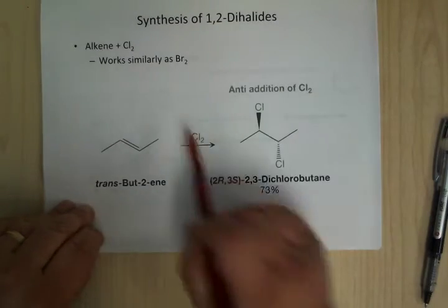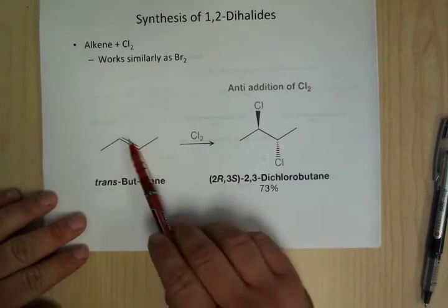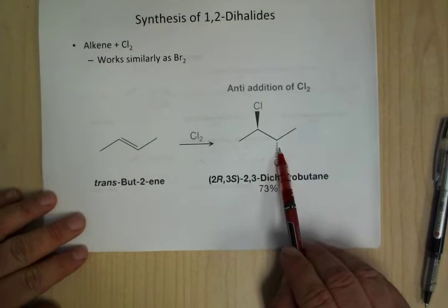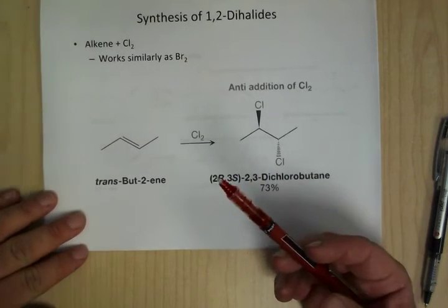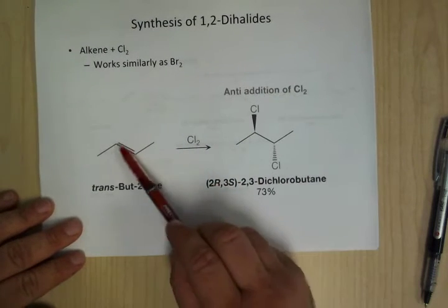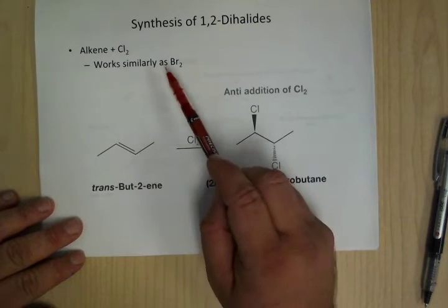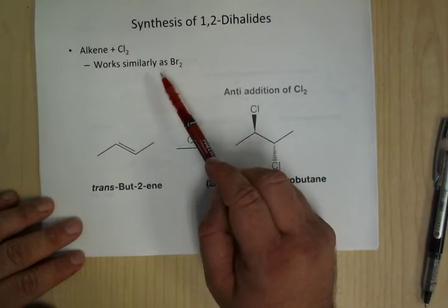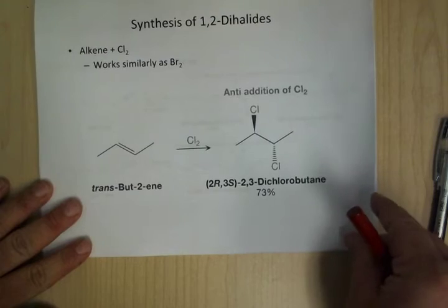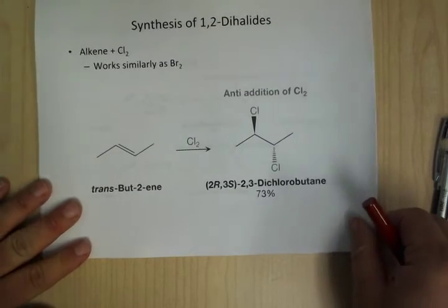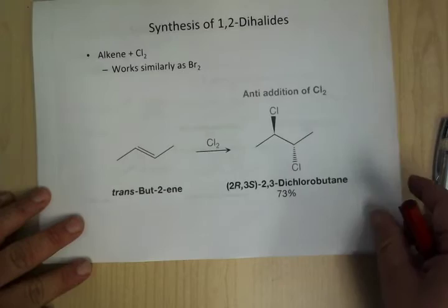It works the same way with chlorine — you're going to get one up, one down. Fluorine would work except F2 is explosive in the presence of alkenes. I2 does work but you have to add some acid. Usually this works with bromine and chlorine — that's the regular mechanism we deal with.